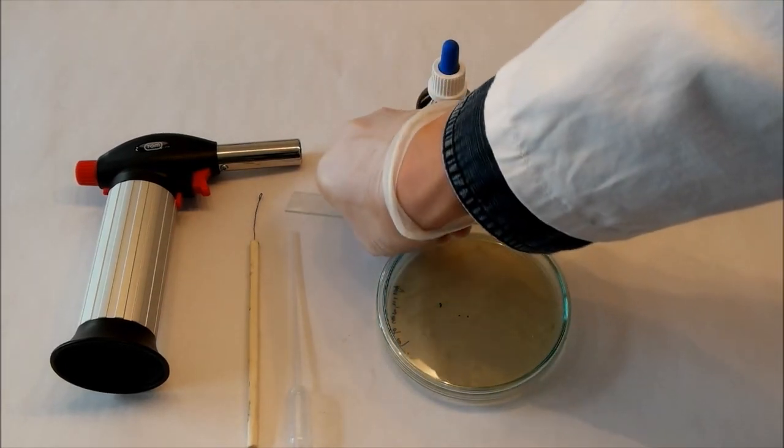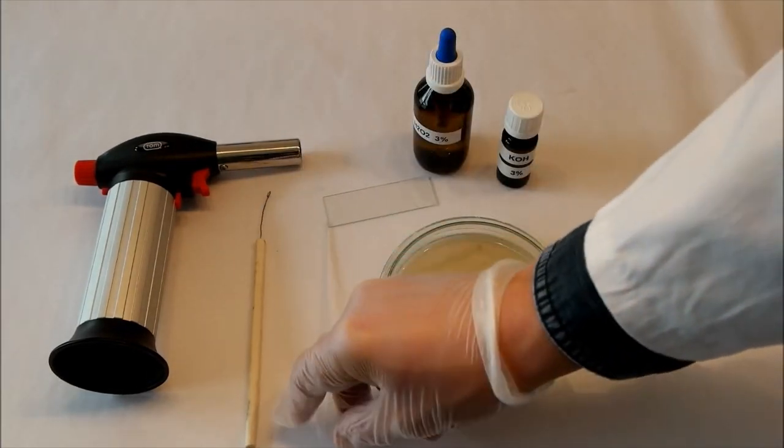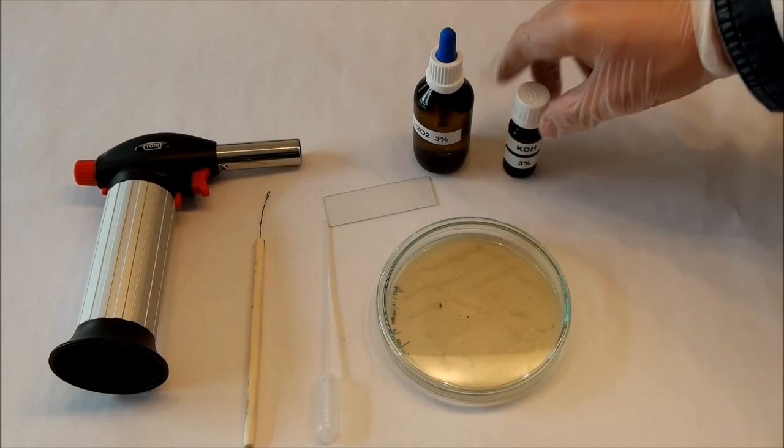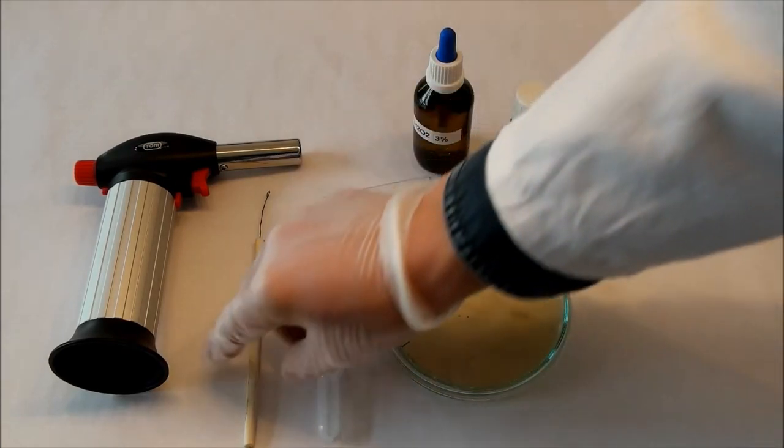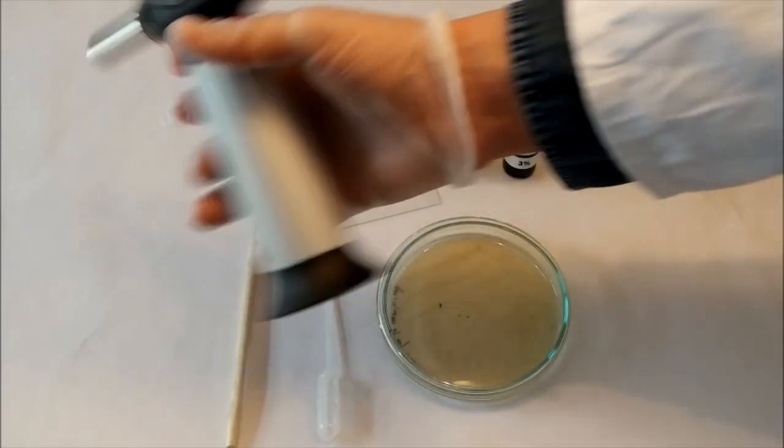Furthermore you need a glass slide, like for microscopes, then a pipette to drop the potassium hydroxide later, and an inoculation loop, and to sterilize it, a little Bunsen burner, like this one.